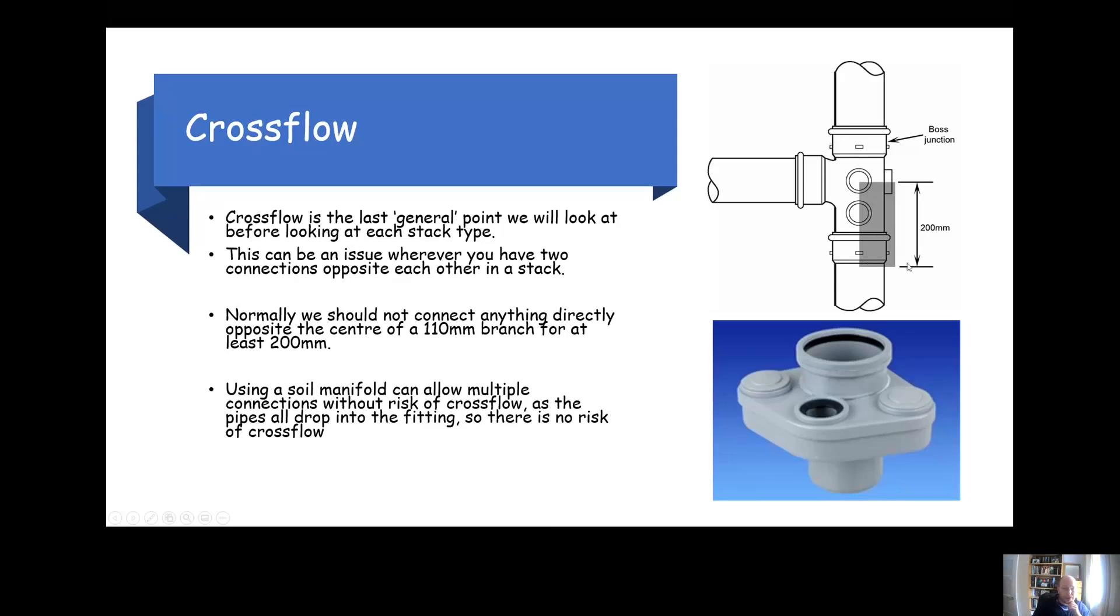To prevent cross flow, wherever you have a 110 millimeter connection, you shouldn't connect anything within 200 millimeters directly opposite it. You can make connections at the side, it's absolutely not a problem, just not anything within 200 or directly opposite a 110 millimeter connection.